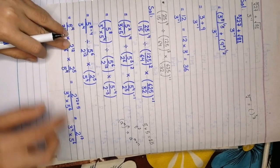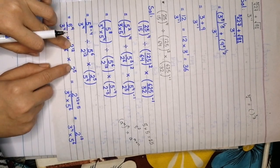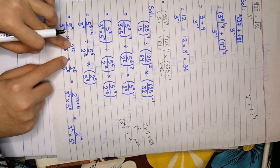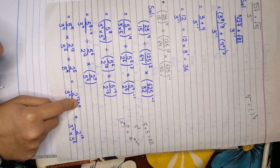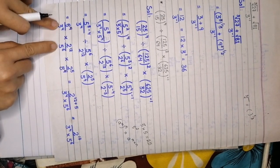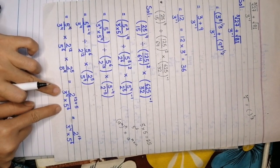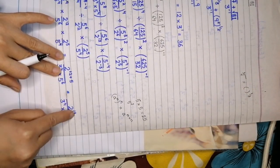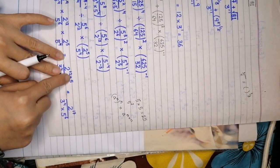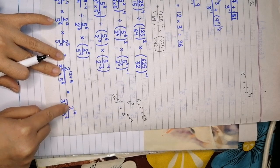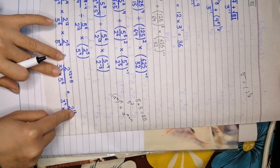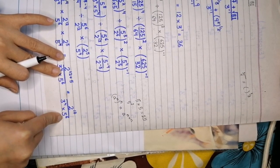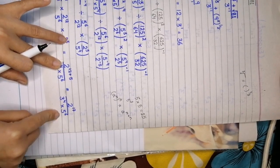We have the same base with a multiplication sign, so we add the powers. After adding the powers, our final answer is 2 raised to power 17 divided by 3 raised to power 4 multiplied by 5 raised to power 6.